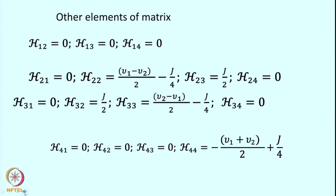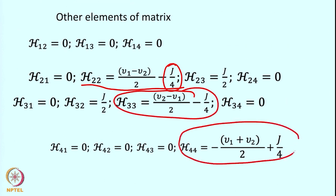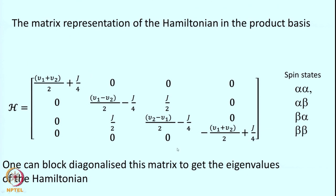Similarly, the other matrix elements can be calculated: H12 = 0, H13 = 0, H14 = 0. H22 has value −J/4, H33 also −J/4, and H44 is +J/4. Solving this equation gives non-zero terms and J/2 terms as well. The result is a block-diagonalized representation of the matrix with four diagonal elements H11, H22, H33, H44, and because of state mixing, H23 and H32 are also populated.